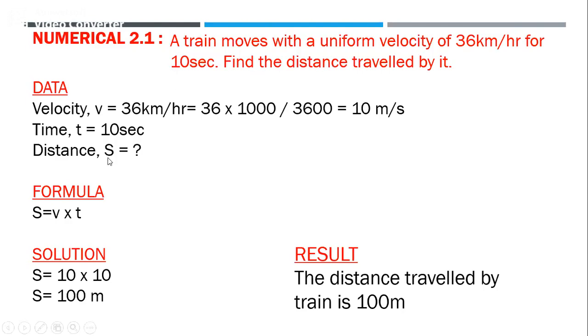Now, time is 10 seconds and velocity is 10 m/s. Use the formula s = v × t. Simply put in the values and you get the result.